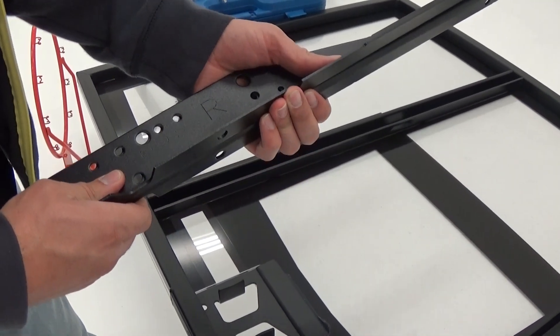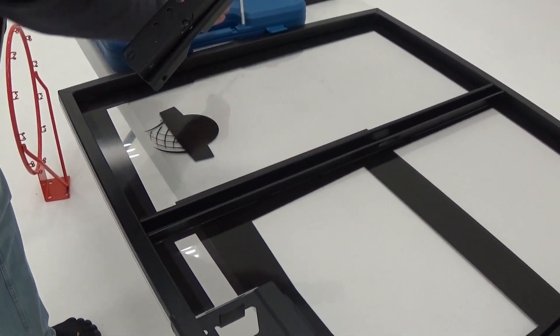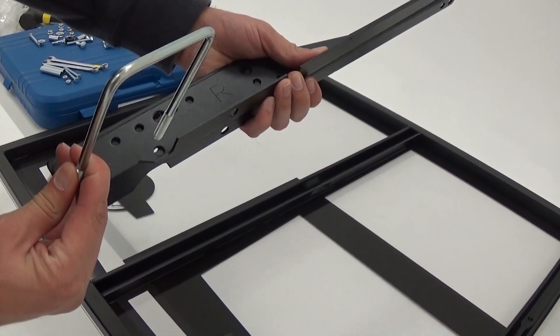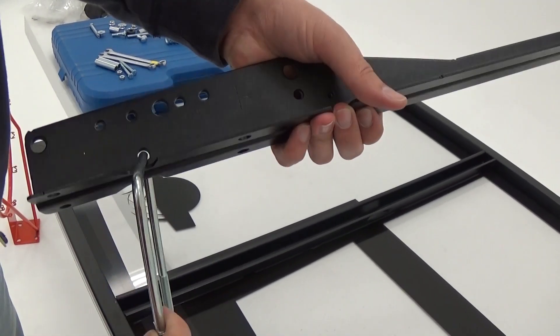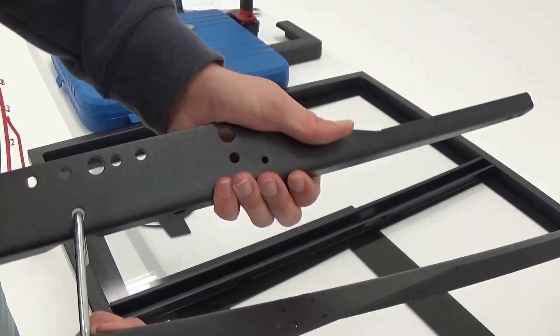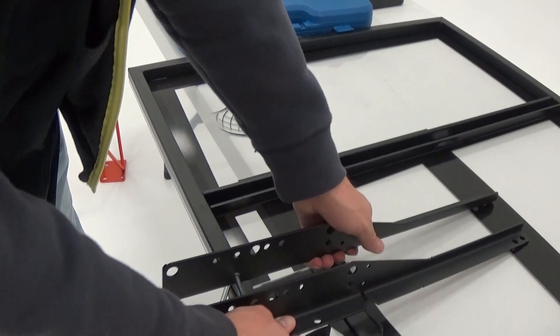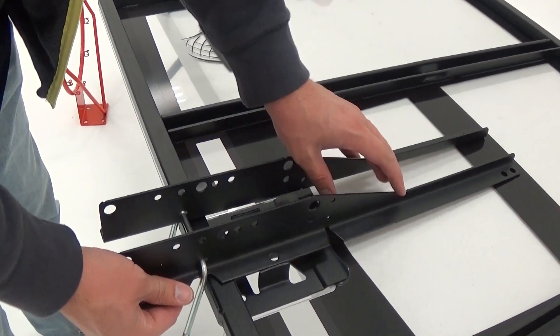Slide the U-bolt through the backboard brackets. Secure the backboard brackets with the spacers and hardware shown. The U-bolt should rest in the notches on the brackets.